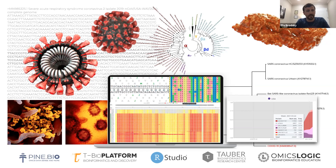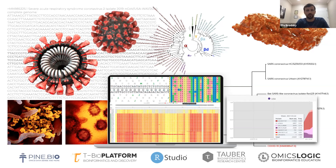The U.S. government interagency group developed a variant classification scheme that defines three classes of SARS-CoV-2 variants: number one, variant of interest; number two, variant of concern; and number three, variant of high consequence.